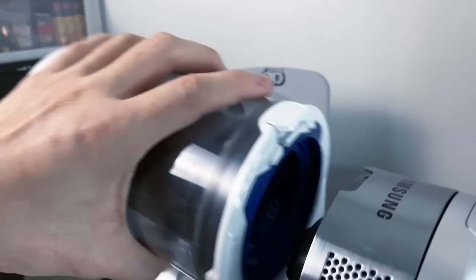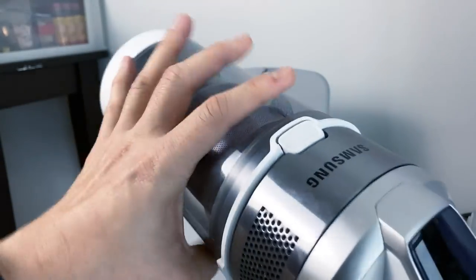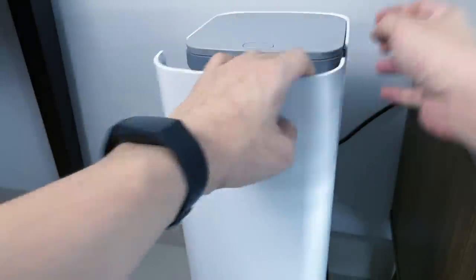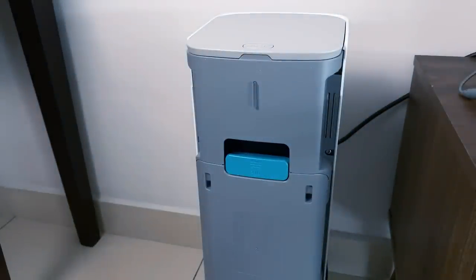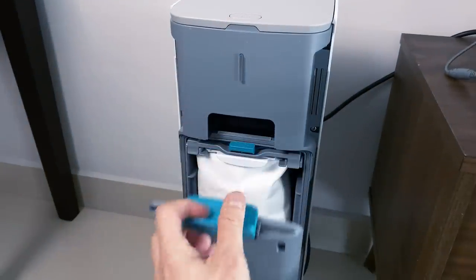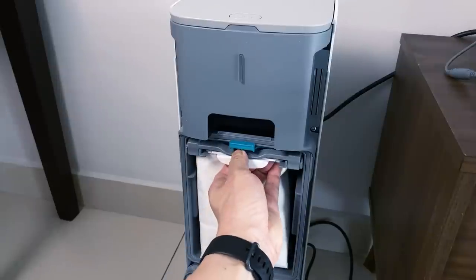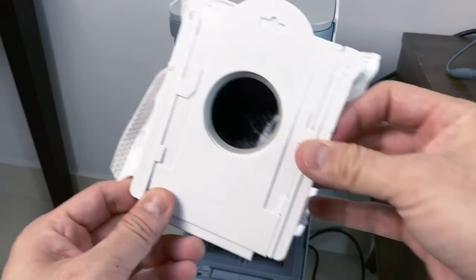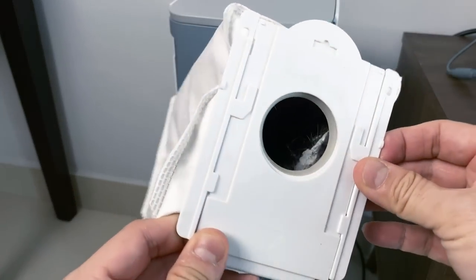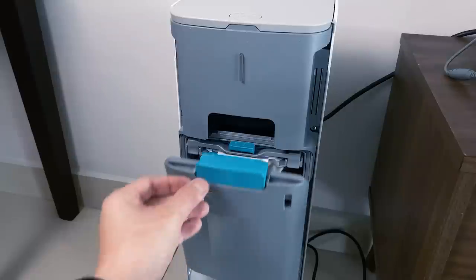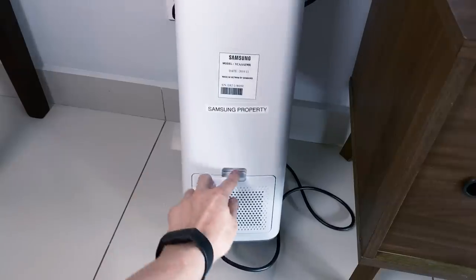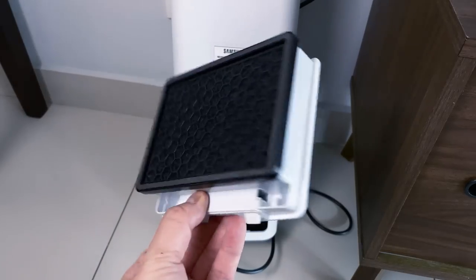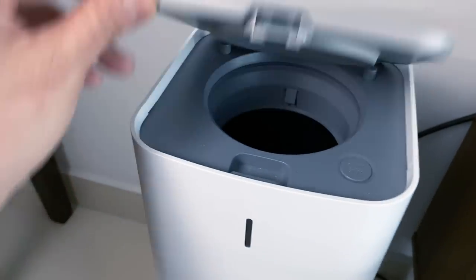It's an airtight design that Samsung claims is 400 times more hygienic than conventional dustbins. A 2-liter dust bag collects all emptied dust. This needs to be replaced once every 2-3 months, depending on usage. The CleanStation is built with a 5-layered HEPA filtration system to ensure no ultrafine dust or allergens escape back into the air.